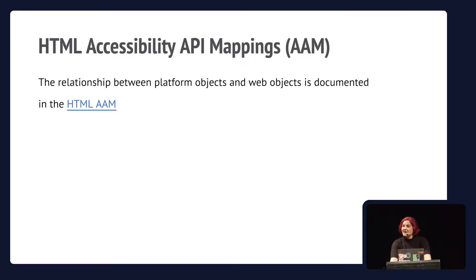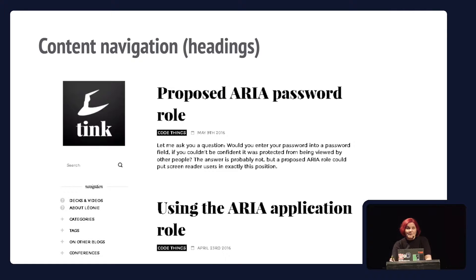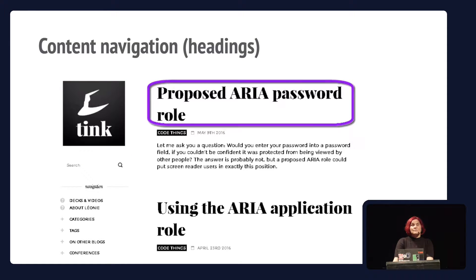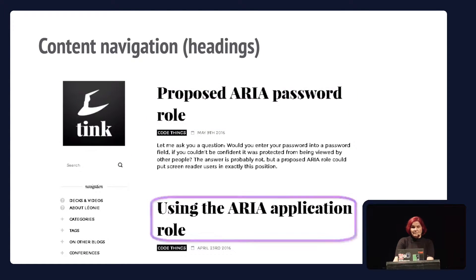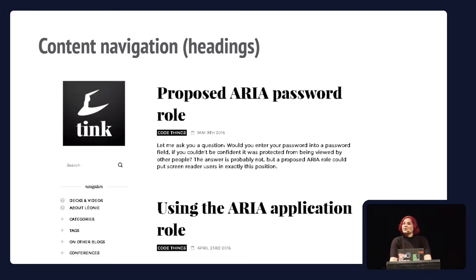There is one AAM for HTML, another for SVG, and a core document covering basic information. As a quick example of what happens when you use a screen reader on a page with basic headings — H1, H2 — the screen reader announces the heading as you see it on screen, but also picks up information from the HTML element, announcing 'level one heading' for H1 and 'level two heading' for H2, and so on.